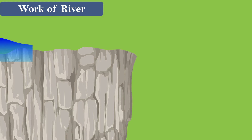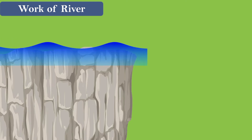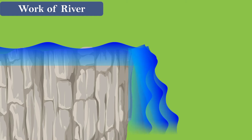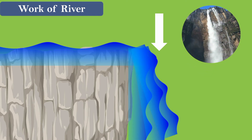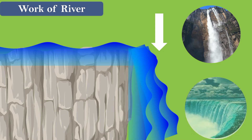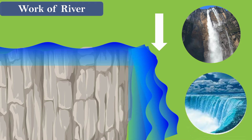Now let's see the work of a river in exogenic changes. When a river flows on top of a cliff and once it comes to a dead end, it falls down with great force, resulting in the formation of a waterfall. There are many beautiful waterfalls around the world, such as the Angel Falls in Venezuela, which is the tallest waterfall in the world, and the Niagara Falls, located on the border of Canada and the USA.